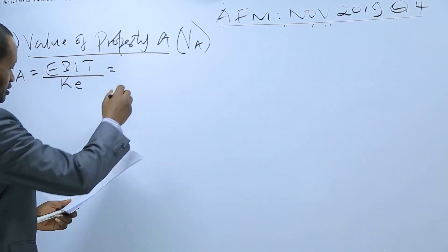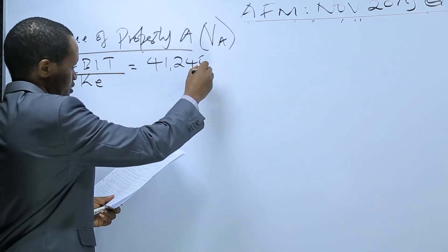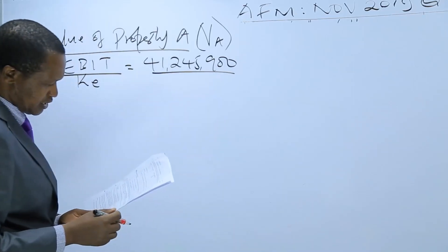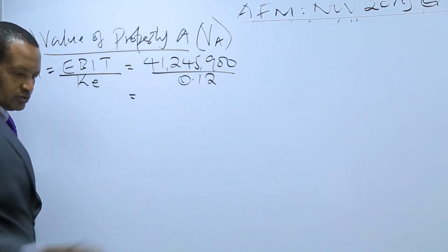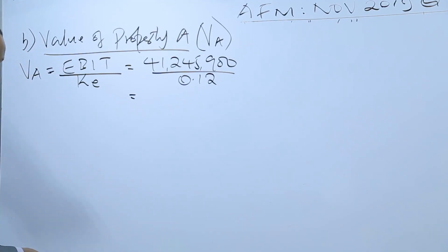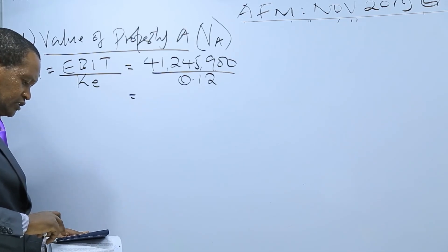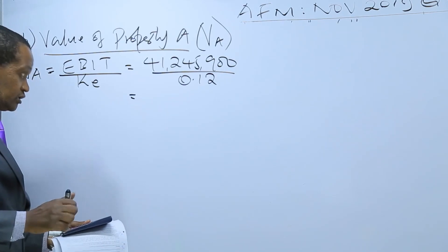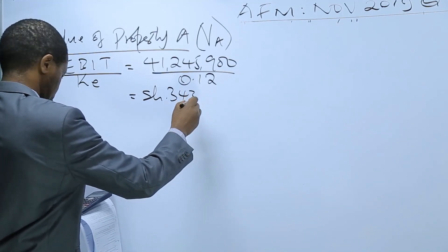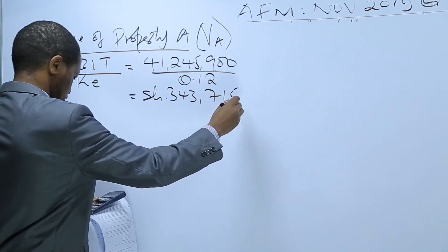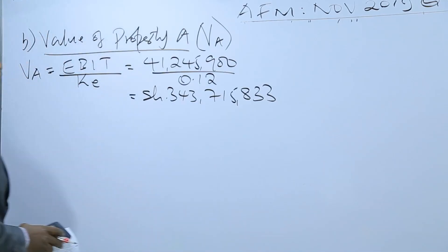The earnings before interest and tax is provided from the question: $41,245,900 shillings. The cost of equity is 12%, converted into decimal that would be 0.12. So the calculator gives us $41,245,900 divided by 0.12, which is equal to shillings $34,243,715,833. That's the value of Property A.